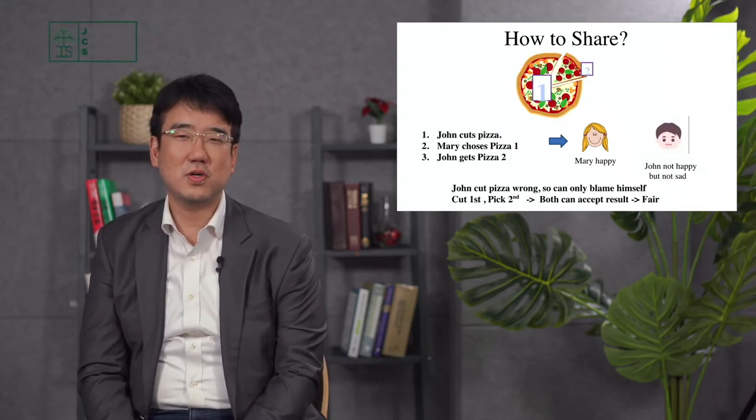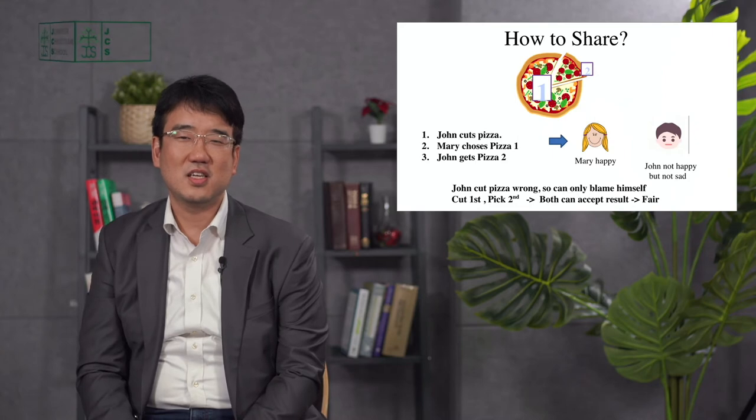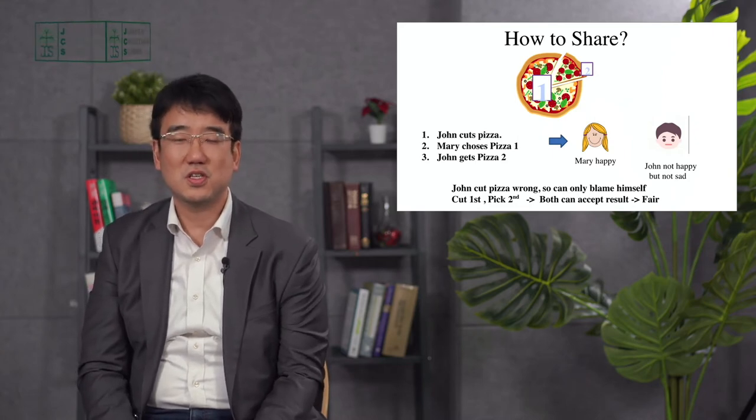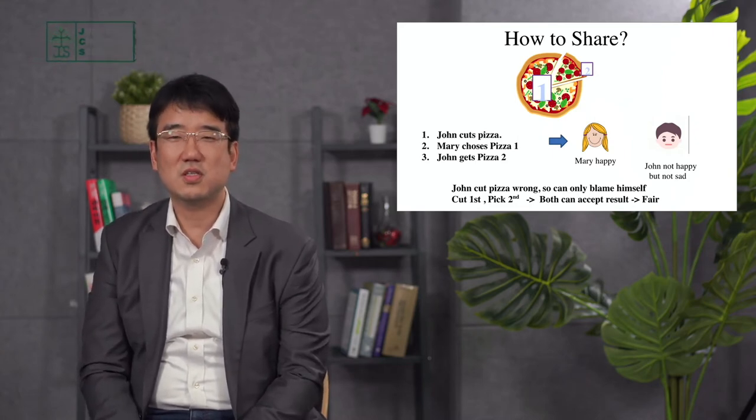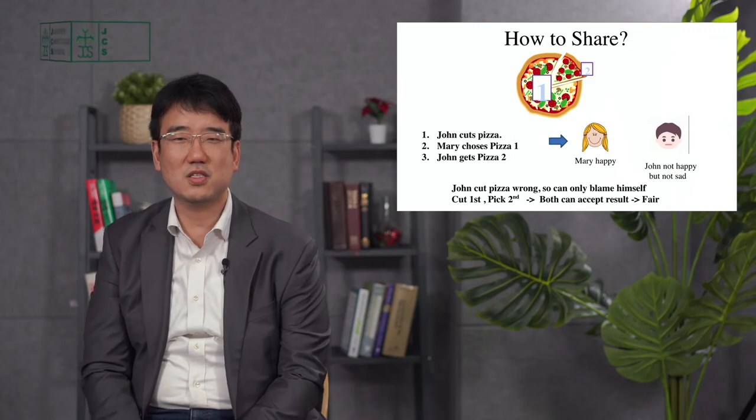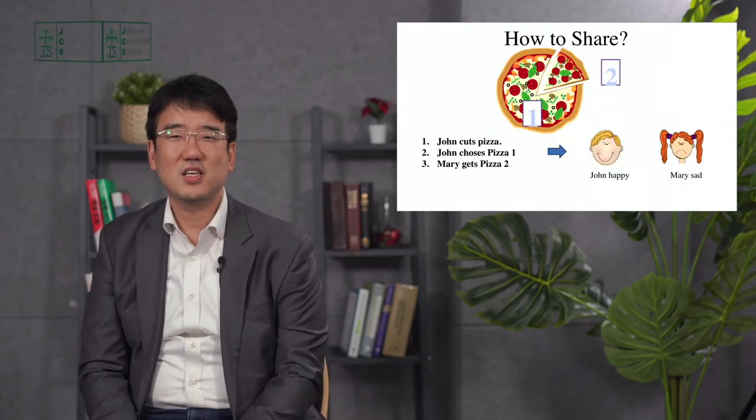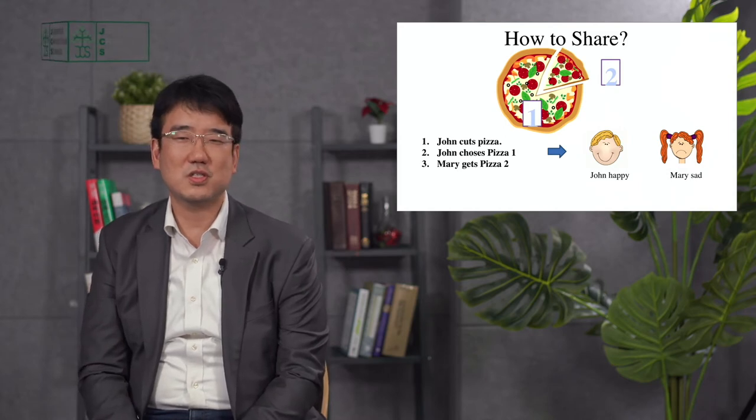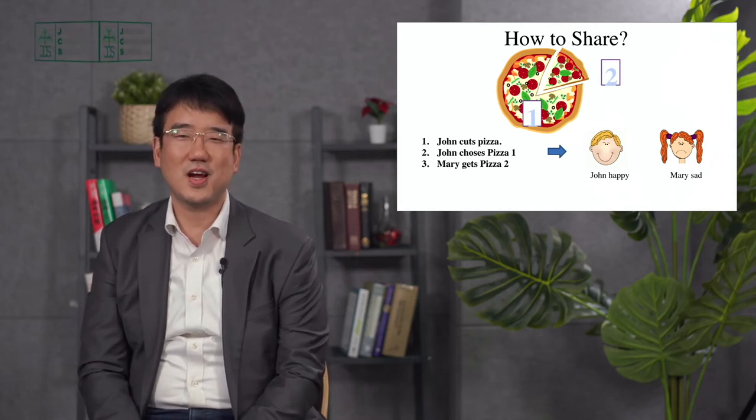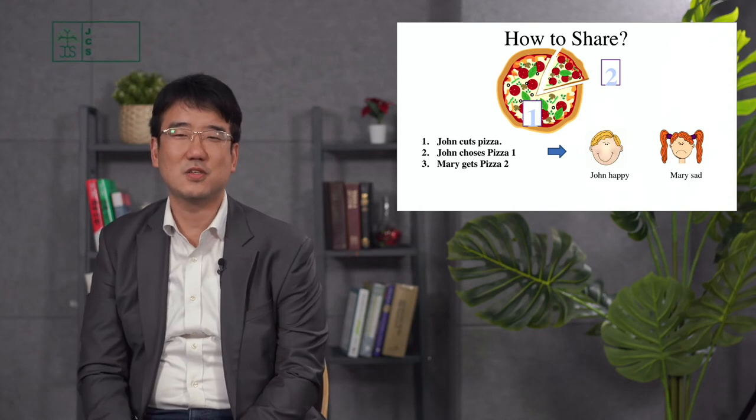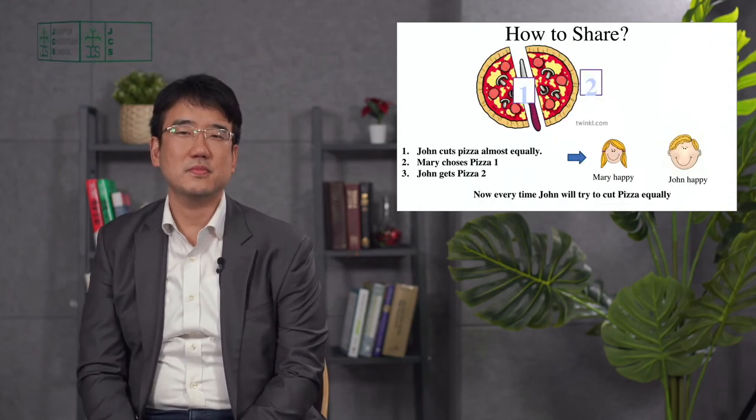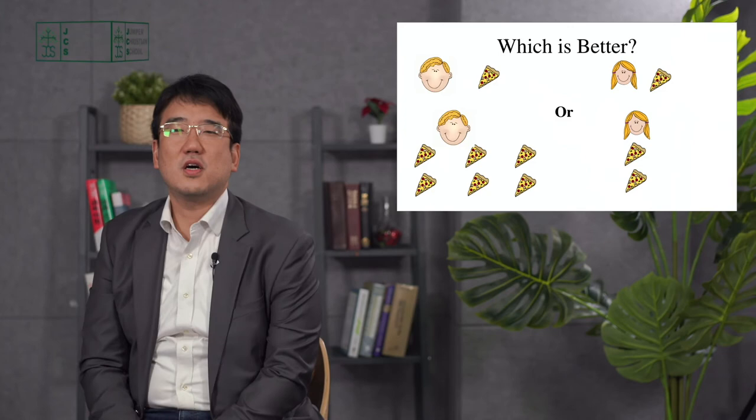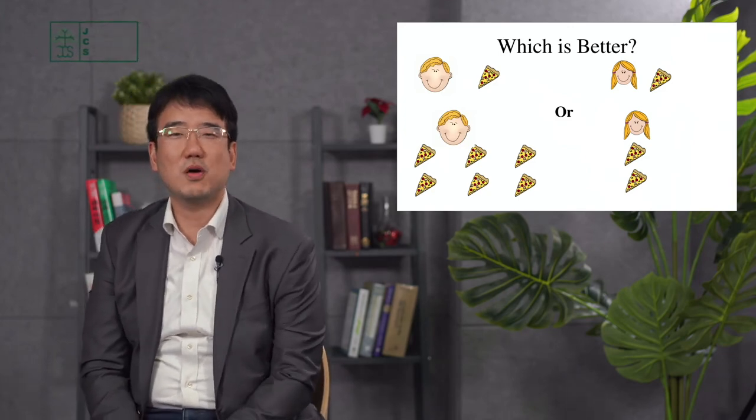Pizza two where John gets to cut it but Mary gets to choose first. That's almost as good. Quite fair justice. And we think John getting to cut the pizza and John getting to choose the pizza first is the least fair or unfair or not just.